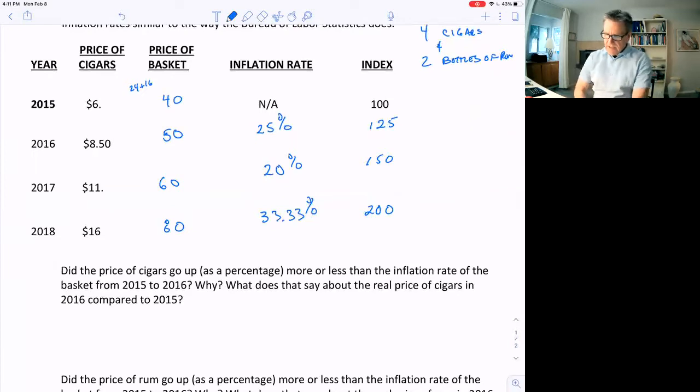So what about cigars? Do they go up more than the inflation rate of the basket from 2015 to 2016? When I calculate the growth rate of cigars, that would be 8.50 minus 6 over 6, I get 41%.